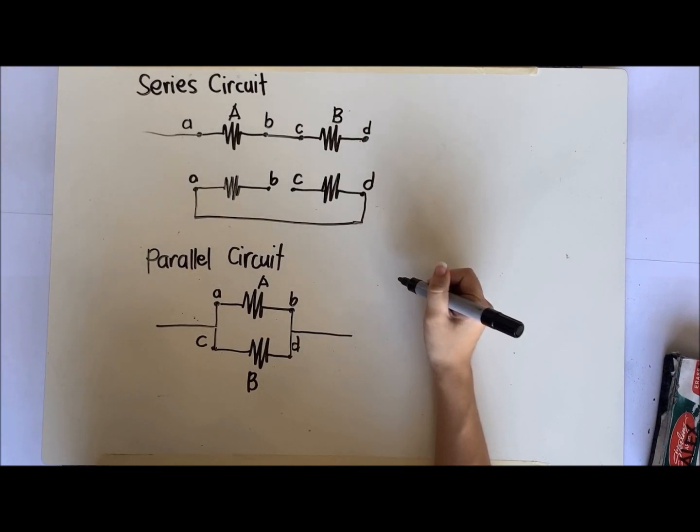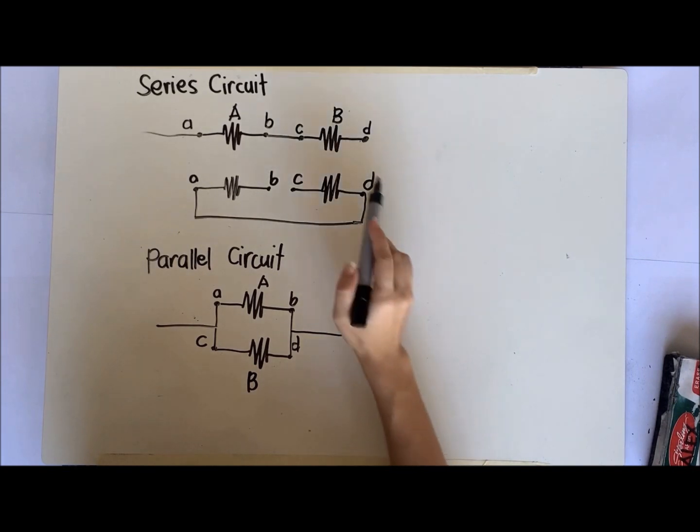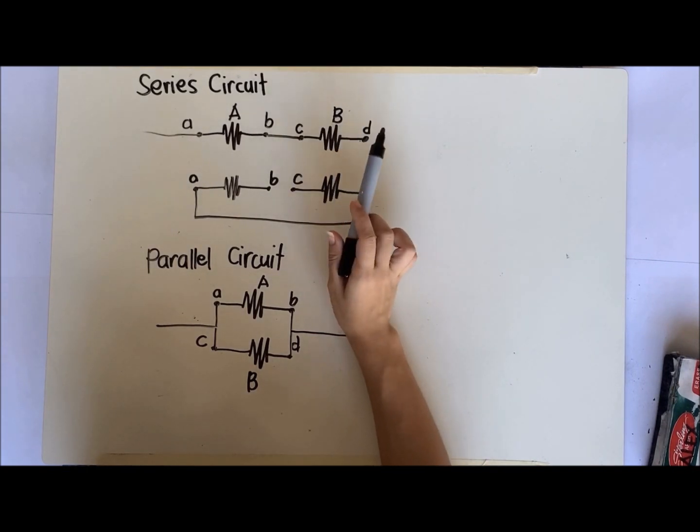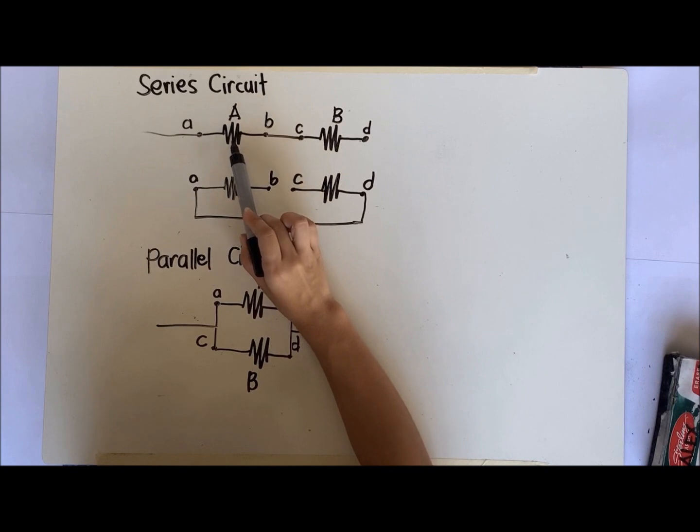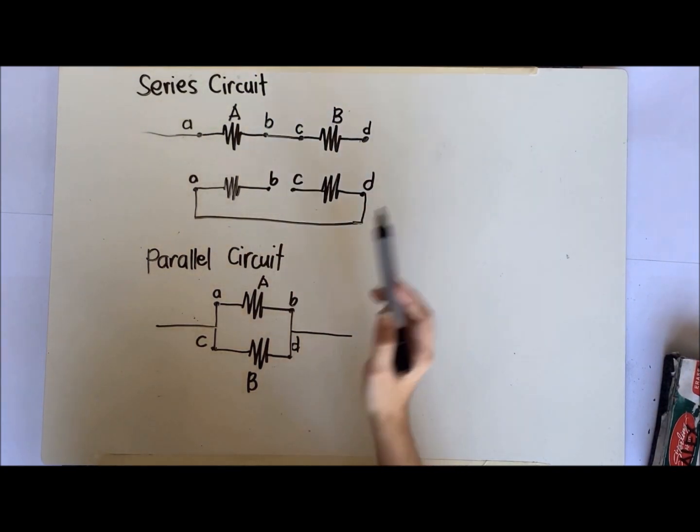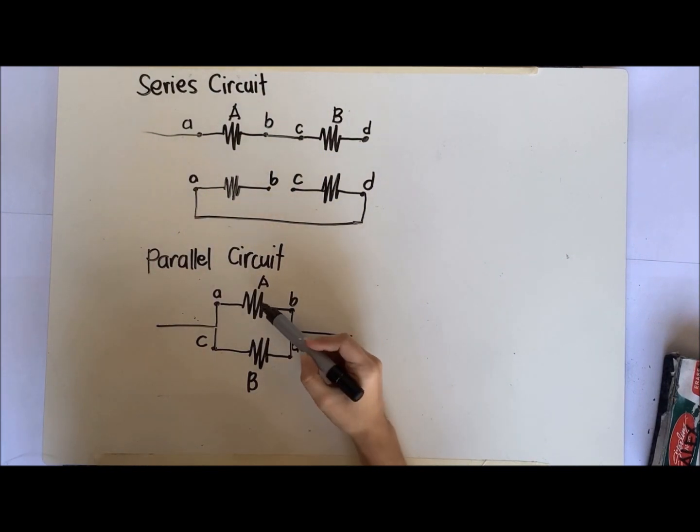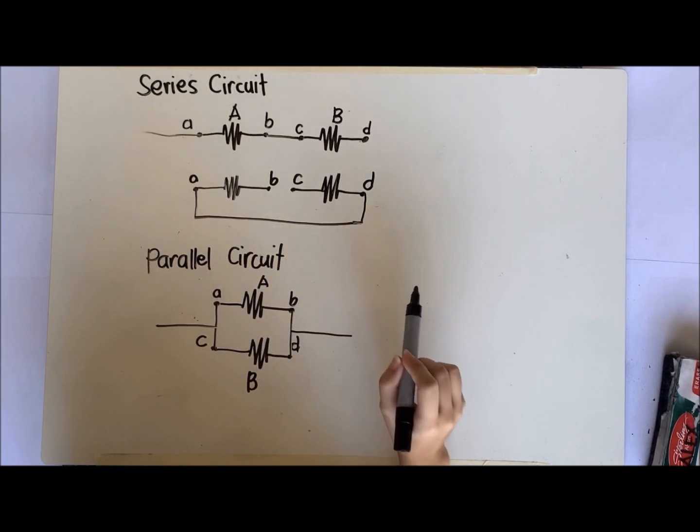What confuses people when they identify between series and parallel is they base it on appearance. Most of the time, you'll see a series circuit where the resistances are aligned or in a row and simply connected by a line. And when it's parallel, you'll notice the resistances are facing each other and connected together. Okay, but that is not the usual case.